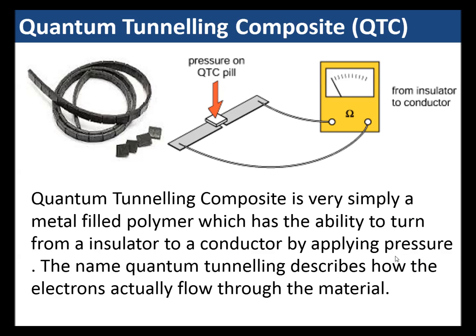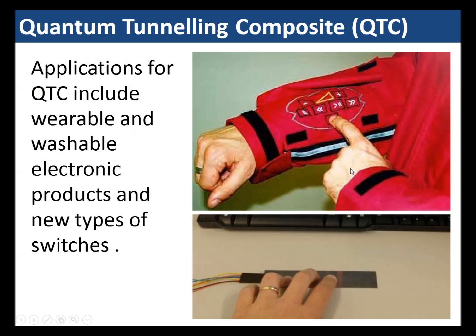Quantum tunnelling composite (QTC) is a metal-filled polymer which has the ability to turn from an insulator to a conductor by applying pressure. The name 'quantum tunnelling' describes how the electrons flow through the material — basically, a small block of material which, when pressure is applied, goes from an insulator to a conductor. Applications include wearable and washable electronic products and new types of switches.